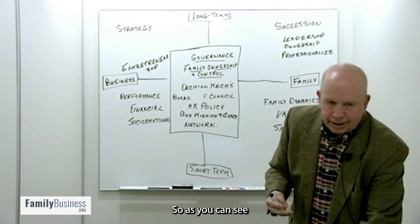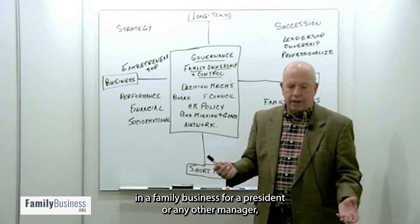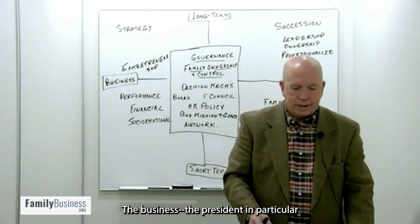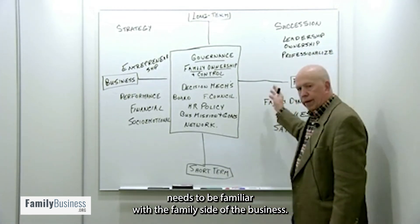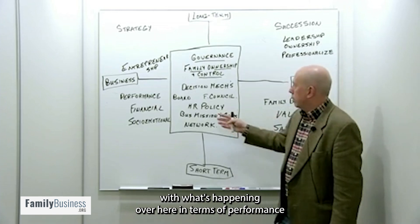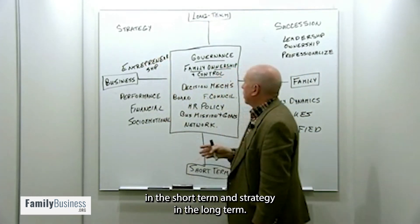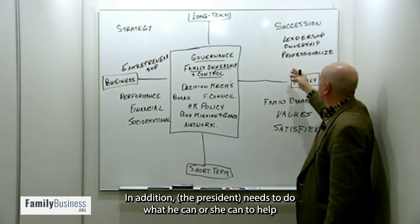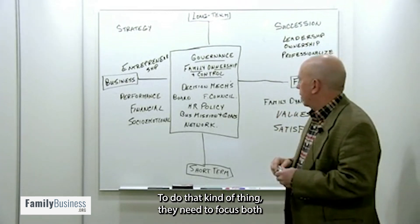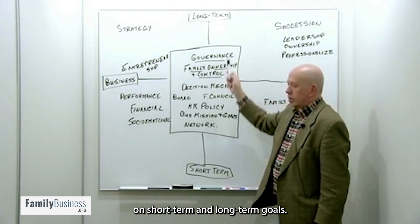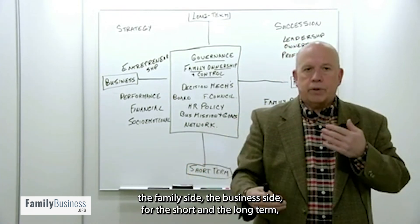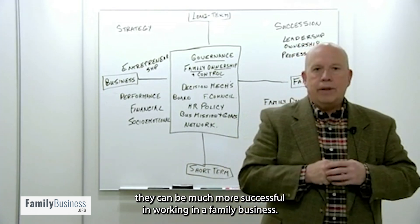As you can see, in a family business, both the business and the family dimensions are very important for a president or any other manager. The president needs to be familiar with the family side of the business, familiar with the values, and needs to make sure that family members are satisfied with what's happening in terms of performance in the short term and strategy in the long term. In addition, the president needs to do what they can to help prepare leaders and owners for the next generation, focusing on both short-term and long-term goals. As they pay attention to both sides — the family side and the business side, for the short and long term — they can be much more successful in working in a family business.